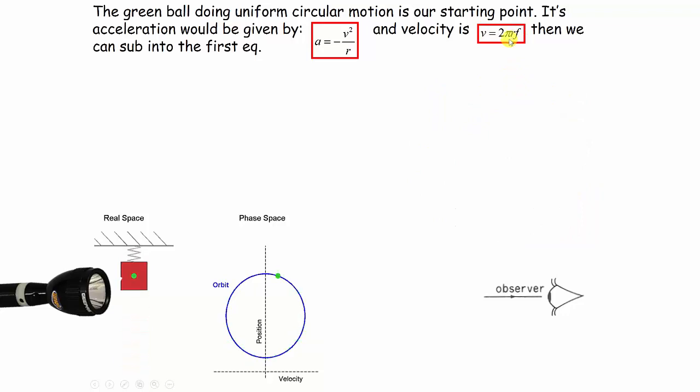That's its instantaneous velocity at any moment in time. Just to get the equations into the same format that are commonly used in physics exams, if I substitute this equation into this one, I get r and r here can cancel out.